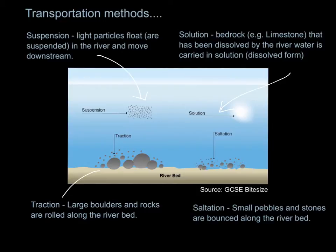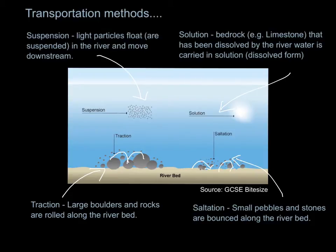Large boulders and pebbles that are too heavy to be picked up and suspended in the water column are rolled along the river bed — this is traction, usually happening in the upper course. Saltation is when small pebbles and stones are bounced along the river bed in a leap-frogging action. So in summary: floating, dissolved, rolling, and bouncing.